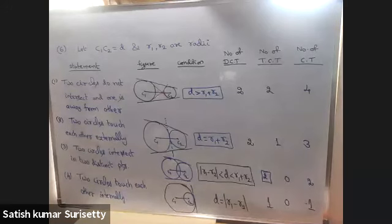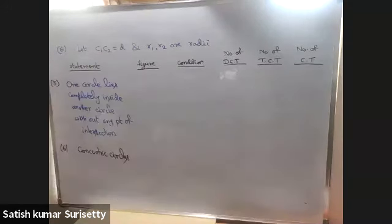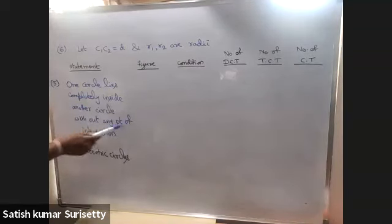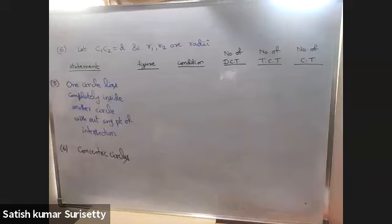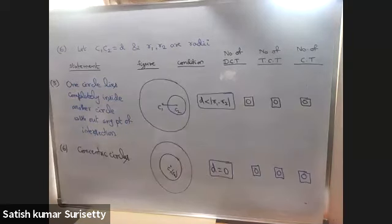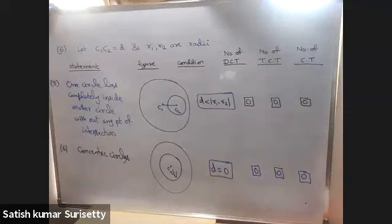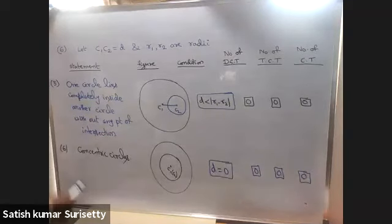Additional cases: if one circle lies completely inside another without any point of intersection, the condition is D < |R1 - R2|, and there are no common tangents at all. For concentric circles, D = 0, and again there are no common tangents.